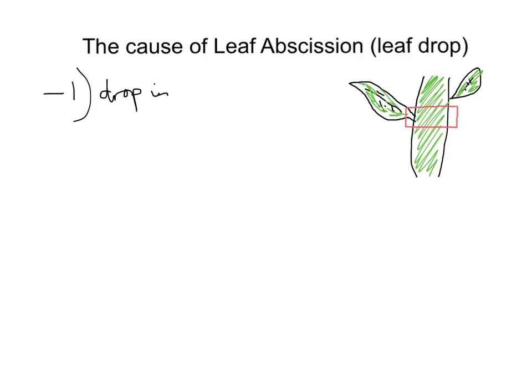There's a drop in cytokinin hormone. Now, there are many different plant hormones — we've got auxins, cytokinin, ethene, gibberellins — and there's a separate video that talks through those. But this time we're just interested in cytokinin. What happens is that the plant withdraws nutrients from the leaf, since it is about to drop. The plant doesn't want to waste nutrients by sending them to a leaf that's about to drop.